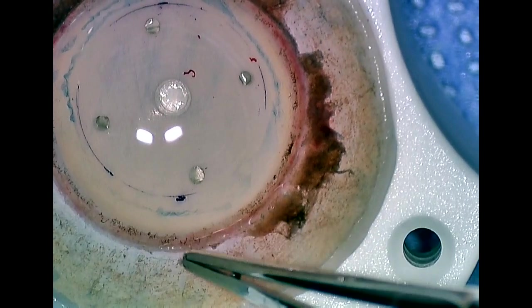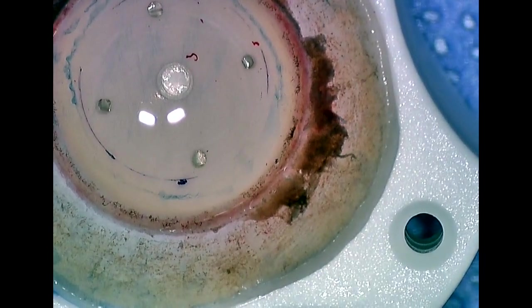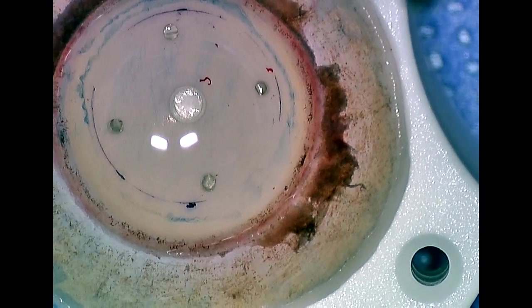Now here we put the cornea on the trephine and you'll notice the trephine has a purple kind of ring in the center. That's that 8.25 millimeter mark. I pre-inked that so I'll know exactly where 8.25 millimeters is, and if there are any areas of damaged cornea from the peeling process, I will keep those out of that trephination area.